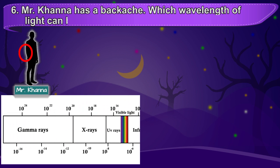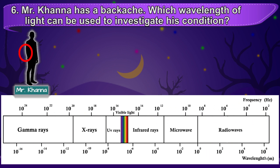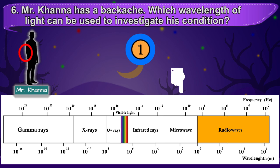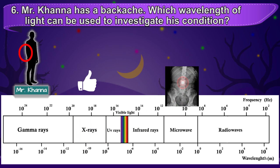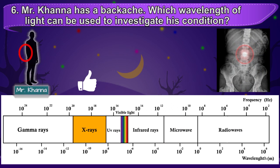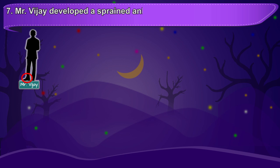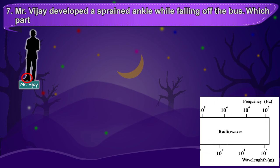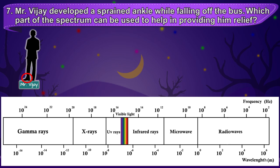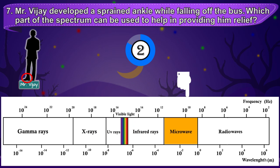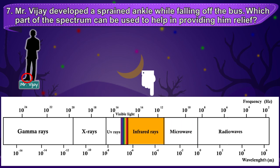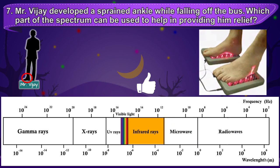Which wavelength of light can be used to investigate his condition? The correct answer is X-rays. Mr. Vijay developed a sprained ankle while falling off the bus. Which part of the spectrum can be used to help provide him relief? The correct answer is the IR region, because IR is used in heat therapy, which is used to relieve aches and pains.